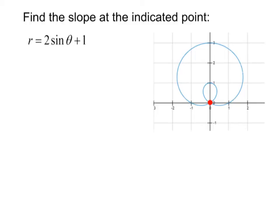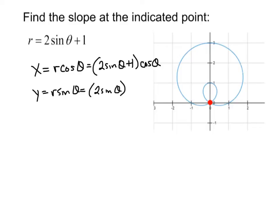Now in this next example, it says find the slope at the indicated point. And what's a little bit tricky here will maybe become evident in a little bit. But let's start with the fact that x is r cosine theta. So for us, that means it's 2 sine theta plus 1 times cosine theta. And remember, we're just substituting what r is equal to. So y is r sine theta, which for us is 2 sine theta plus 1 times sine theta.